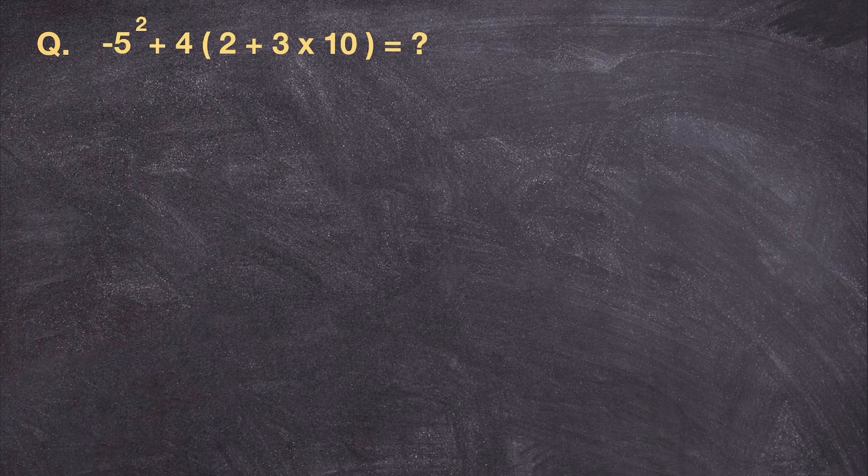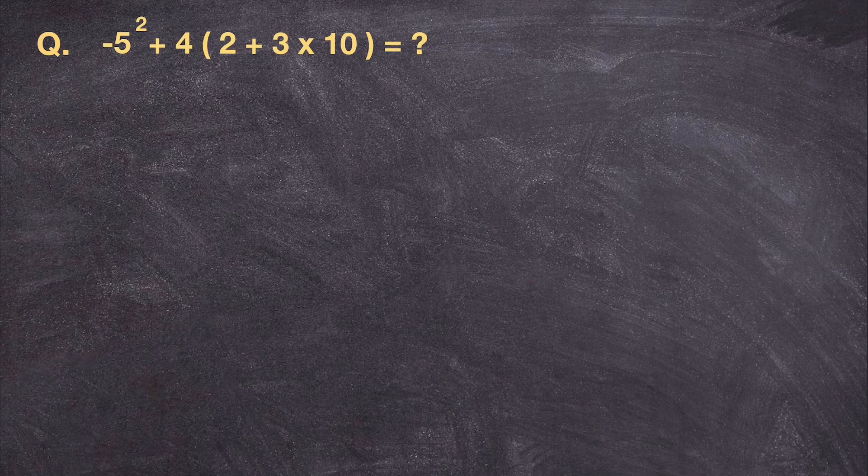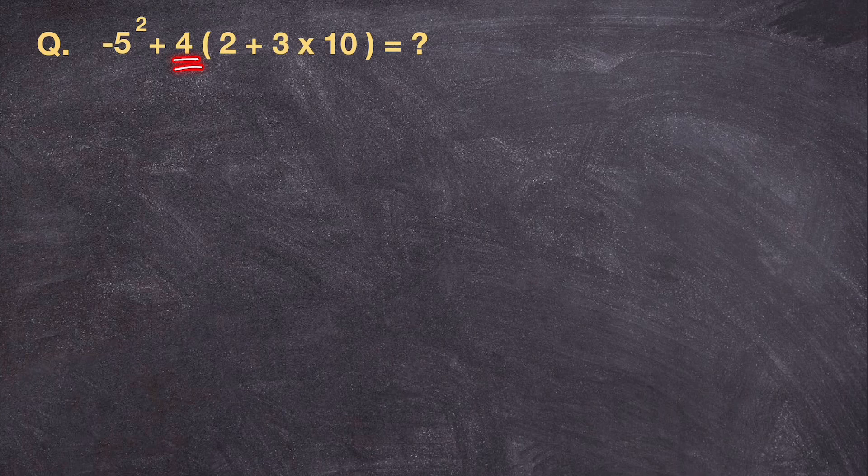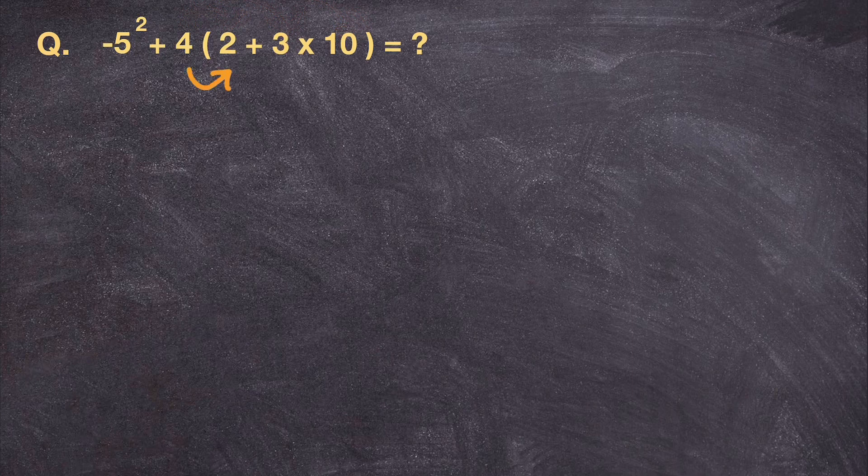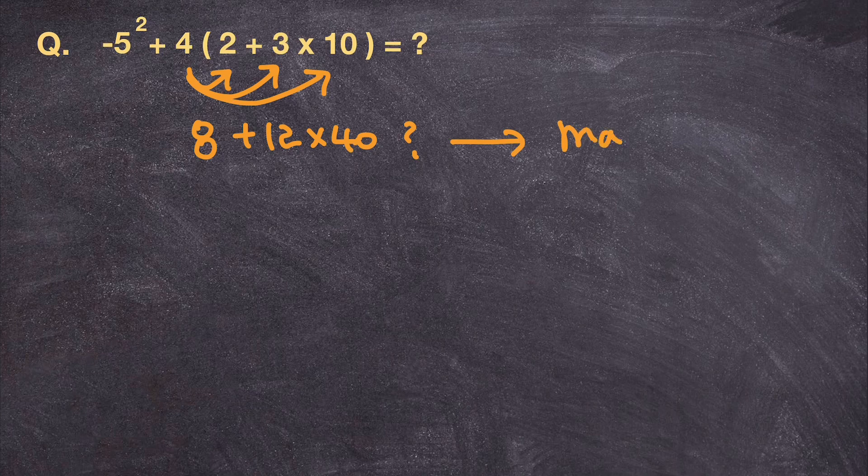So I have negative 5 squared and then plus 4 and then parenthesis 2 plus 3 times 10 parenthesis. So this looks very simple and I see a lot of people do is they go ahead, they get too excited. Oh, I know the distributive property. I'm going to distribute this 4 into 2, 3, and 10 and solve it like that. If you do that, you get 8 plus 12 plus 40 something and they make a big mistake and they get a wrong answer.